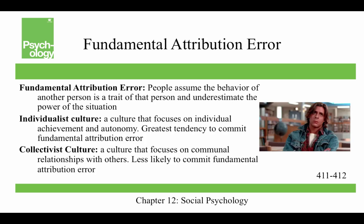That's a picture of John Bender from The Breakfast Club, which is a teen movie from the 80s. The question really is, is he dispositionally a rebel, or have his life circumstances made him rebellious, or is he just an archetype that John Hughes is using? The fundamental attribution error is when people assume that the behavior of another person is a trait of that person and underestimate the power of the situation.